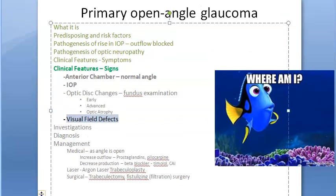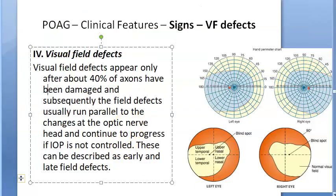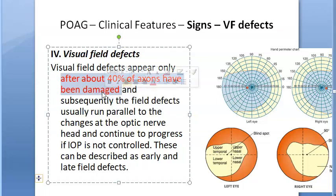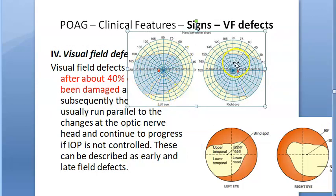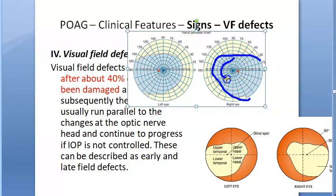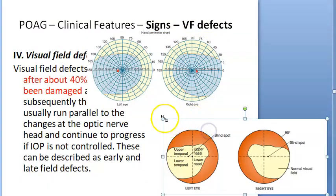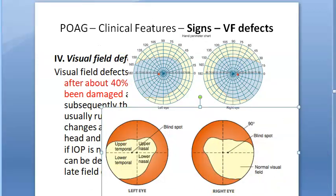We are now at visual field effects. Only after about 40% of axons are damaged will visual field effects become apparent — 40% is quite a large number. Visual field is checked using perimetry. Always focusing on the right eye: this is the normal visual field, with the central vision here and the blind spot here. The blind spot is shown in the diagram.